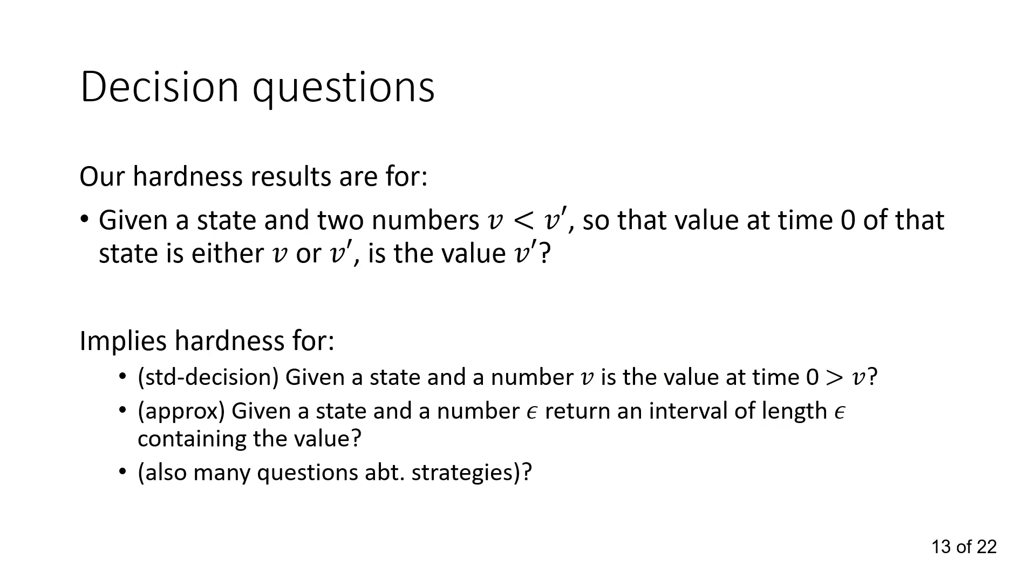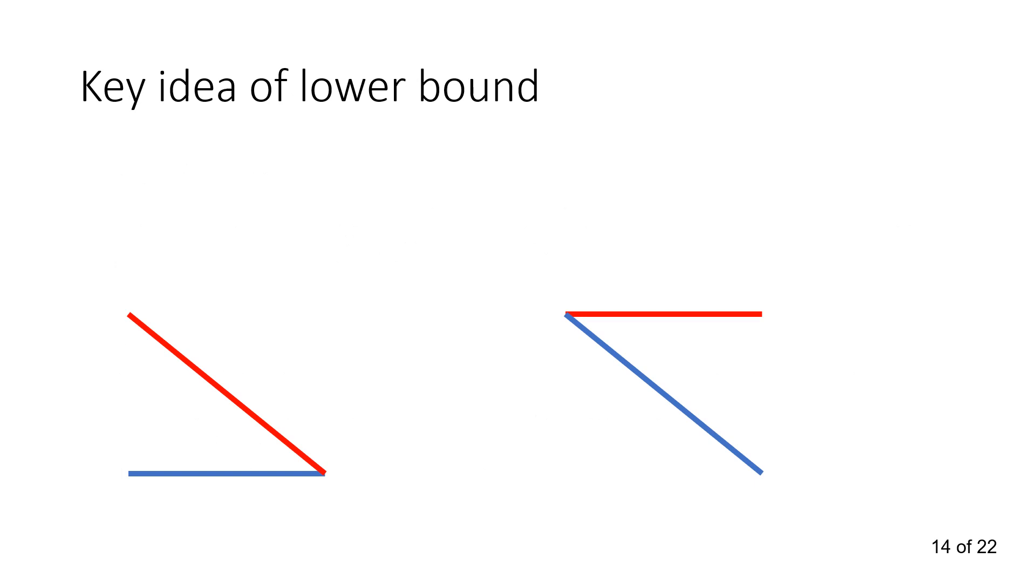Let's look at the formal decision question we show hardness for. It's as follows: Given a state and two numbers, is the value at time zero one of them, which one is it? That turns out to be PSPACE-hard, and it implies hardness for a lot of other questions, like the standard decision question, approximation questions, strategies questions, and a lot of other questions.